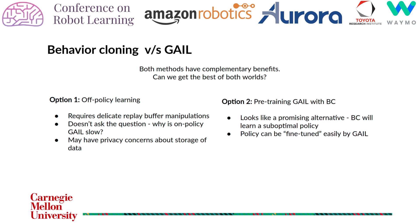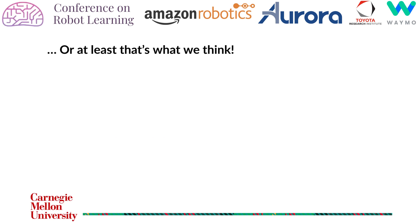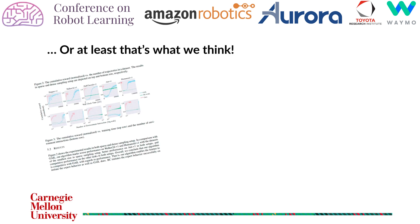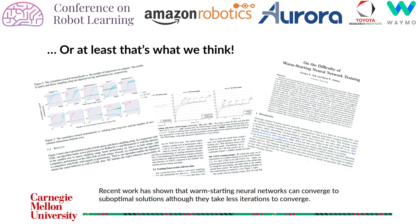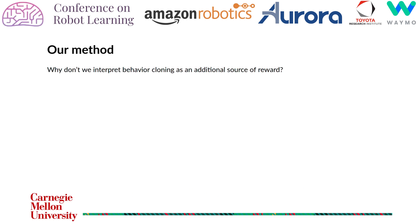We can also try pre-training GAIL with behavior cloning. This looks like a promising alternative where the policy can be fine-tuned in the GAIL stage. However, this does not seem to work in the context of imitation learning. For example, one paper shows that a baseline which uses behavior cloning performs worse than GAIL trained from scratch. Another paper shows that models trained from scratch perform no worse than pre-trained models, although they take more iterations to converge. Similarly, other work has shown that warm-started neural networks may not converge to optimal parameters. This provides the motivation for our method.